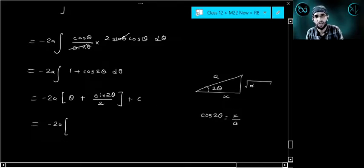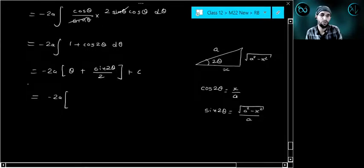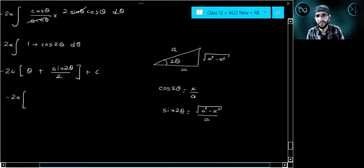x by a equals cos 2 theta. For right angle triangle use under root a square minus x square by a, and theta equals cos inverse x by a.